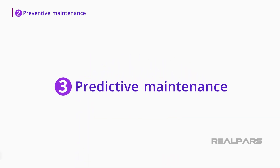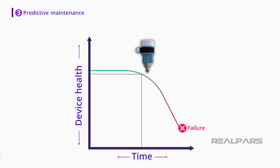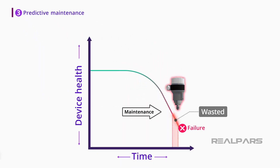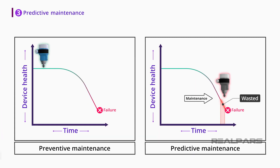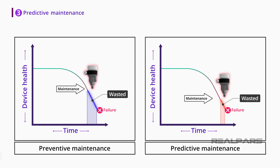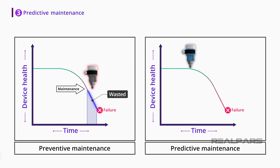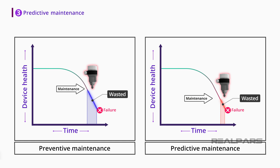This is where predictive maintenance can help. As the name suggests, with predictive maintenance you predict when the device will fail and schedule maintenance just before that. Following this process, you minimize device or machine downtime and maximize its lifetime. So with preventive maintenance you solve the downtime issue but lose device lifetime, whereas with predictive maintenance you can solve the downtime issue and there will be little to no wasted device lifetime.